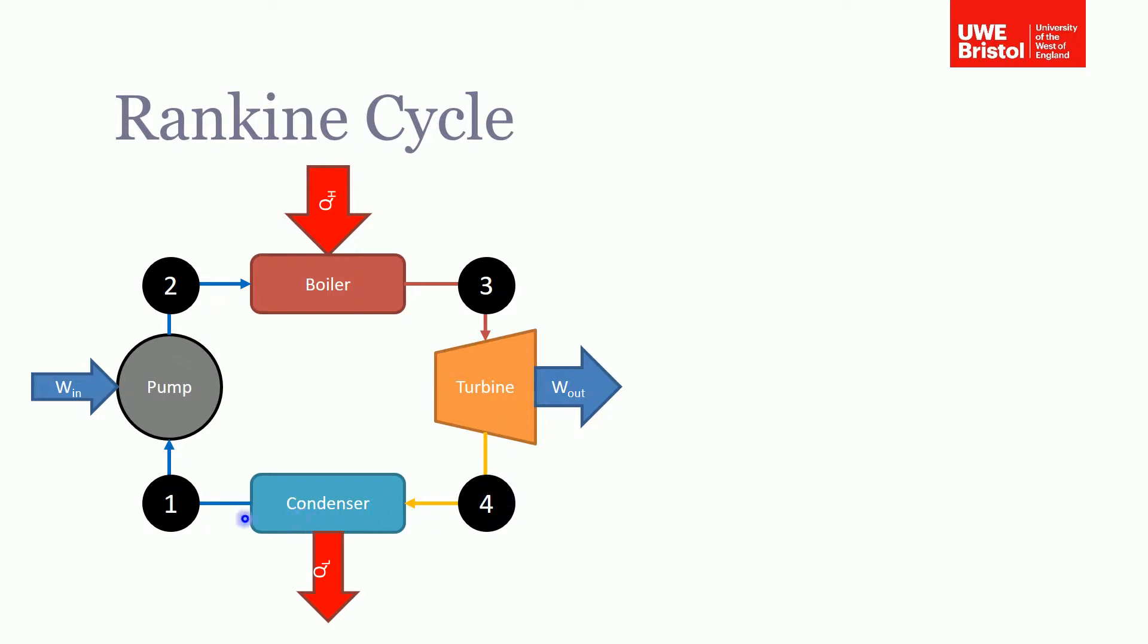That steam is then passed through a steam turbine where work is extracted from that hot vapor until it gets to state four. Then we need to complete the cycle - we need to get the working fluid back to its original state. So we use a condenser to remove some of the heat to take the working fluid back to its original state. Look back at the first session to see why we have to remove heat from the system.